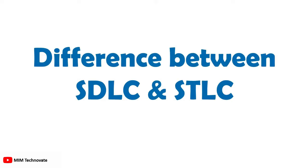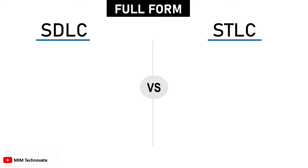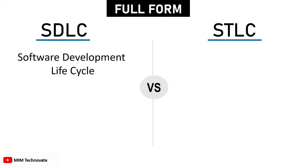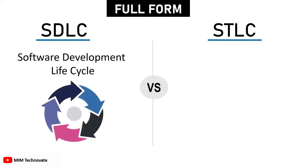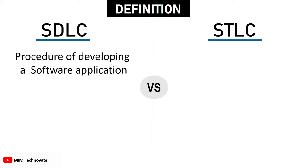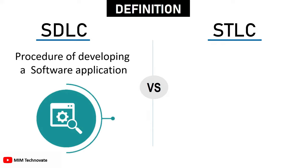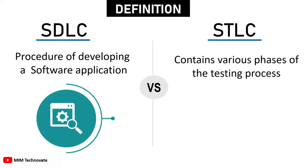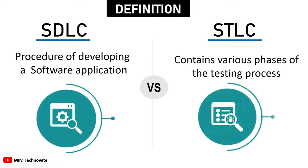Difference between SDLC and STLC. Full form: SDLC stands for Software Development Life Cycle, whereas STLC stands for Software Testing Life Cycle. By definition, Software Development Life Cycle is primarily connected to software development — it is the procedure of developing a software application. Software Testing Life Cycle is linked to software testing, and it is a process that contains various phases of the testing process.